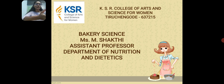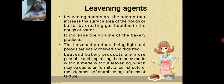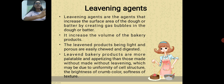We are going to see about the second part of bakery science: leavening agents. Leavening agents are the agents which help in increasing the surface area of the dough or batter, and they help in increasing the volume of the batter or dough by producing gas bubbles in the dough or batter.